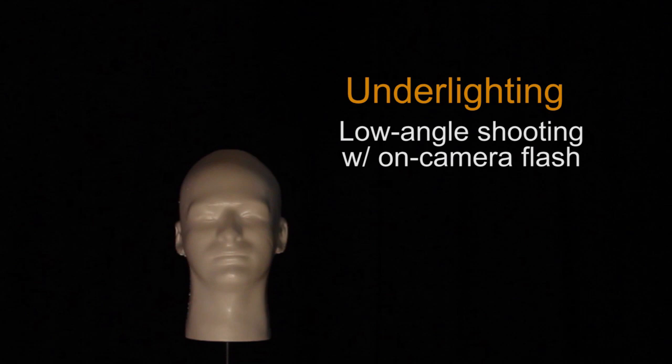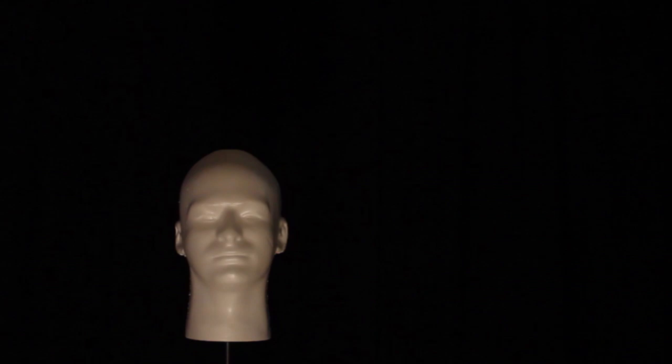One huge problem with on-camera flash is when you shoot from a lower angle. Your flash is coming in from the lower angle, so you're producing that ugly under-lighting look. Take under-lighting to an extreme and you've got monster movie lighting. Doesn't look good at all.